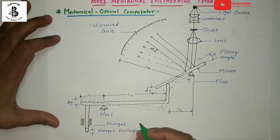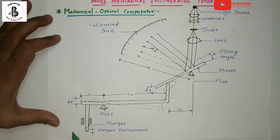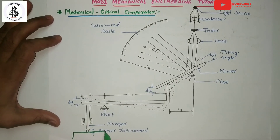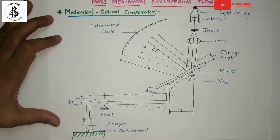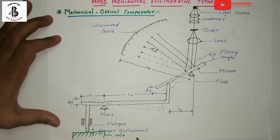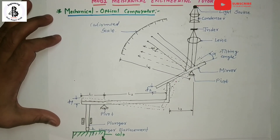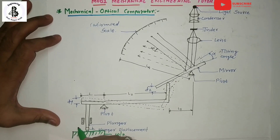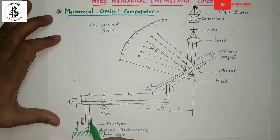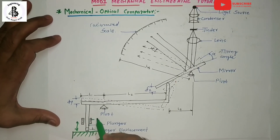Looking at the diagram, this is our workpiece material. The first reading is taken by the standard, and then the reading is taken by the workpiece. According to the change in dimension of the workpiece, the plunger is displaced in the vertical direction. This plunger is supported by slip diaphragms.